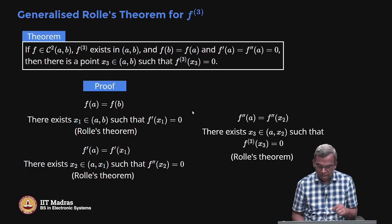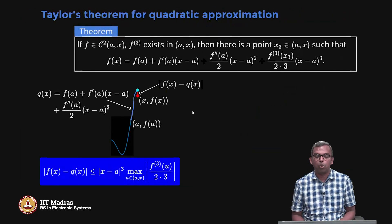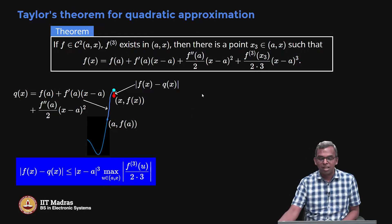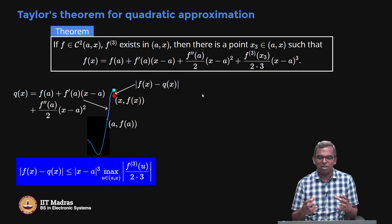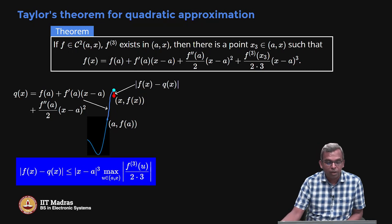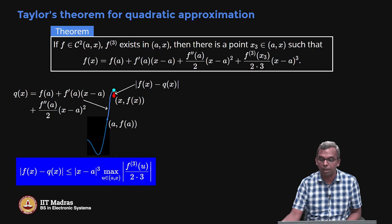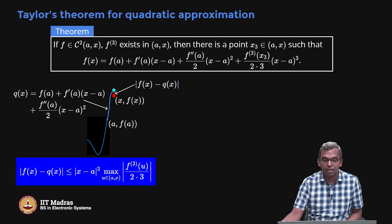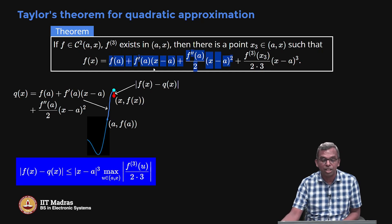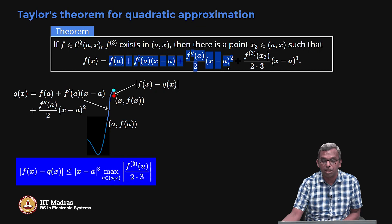Once I do this, I can now do Taylor's theorem for quadratic approximation. It is a little bit more complicated than the previous result, but the spirit is the same. If F is smooth enough — with the same sort of smoothness condition — then there is a point X3 in (A,x) such that F of x can be written as a quadratic function in x, requiring the values of F at A, F prime at A, and F double prime at A. This is the quadratic approximation.